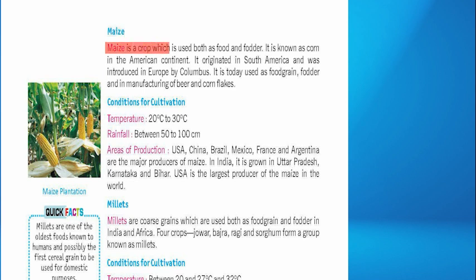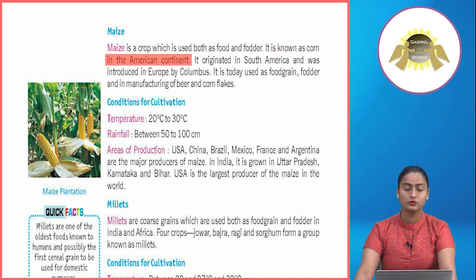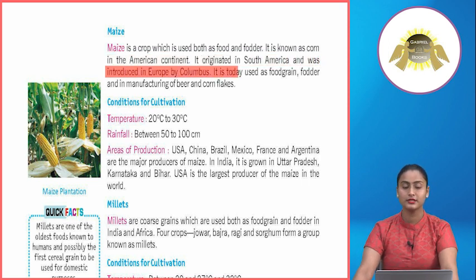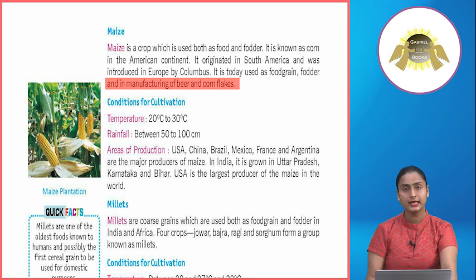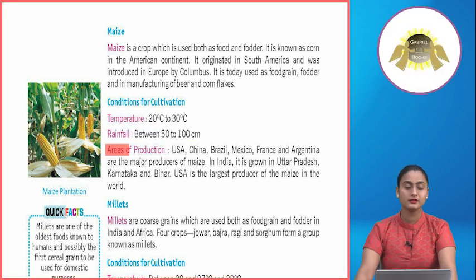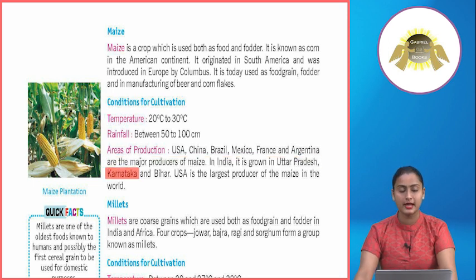Maize is a crop used both as food and fodder. It is known as corn in the American continent. It originated in South America and was introduced in Europe by Columbus. Today it is used as food grain, fodder and in manufacturing of beer and corn flakes. Conditions for cultivation — Temperature: 20 to 30 degrees Celsius. Rainfall: 50 to 100 cm. Areas of production: USA, China, Brazil, Mexico, France and Argentina are the major producers. In India, it is grown in Uttar Pradesh, Karnataka and Bihar. The USA is the largest producer of maize in the world.